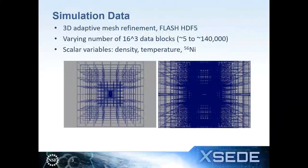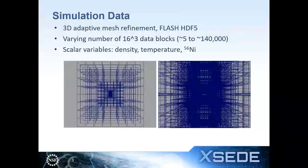The data I received was 3D AMR data in Flash HDF5 format, containing a varying number of blocks — each about 16-cubed — ranging from just 5 blocks before the explosion to over 140,000 individual blocks. The three scalar variables of interest were density, temperature, and nickel, and more importantly, the relationships between them — not just individual slice planes or volume renderings, but how nickel forms in relation to density and temperature within 3D space.